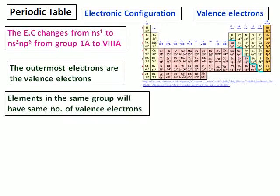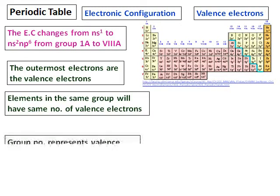Another thing which you can note from the periodic table is elements that belong to the same group will have same number of valence electrons. Like fluorine, chlorine, bromine, iodine will always have 7 valence electrons because they belong to group 7. Group number represents the electrons for A group elements.